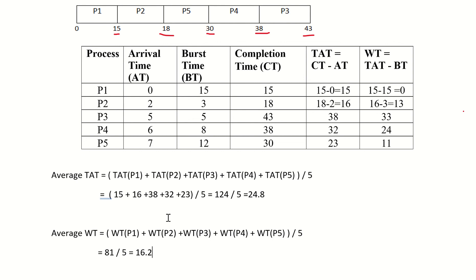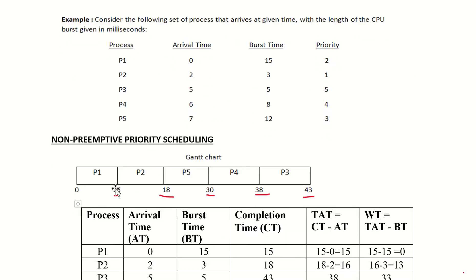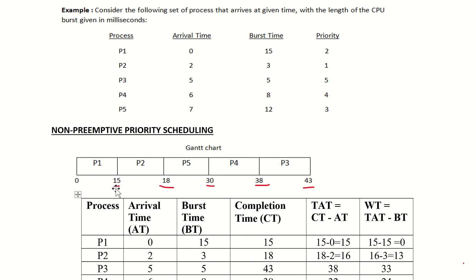This is how we calculate average waiting time and average turnaround time. The difference between preemptive and non-preemptive priority scheduling algorithms is seen in the Gantt chart — in preemptive, one process can be interrupted by another higher-priority process during CPU burst, while in non-preemptive priority it holds and releases.